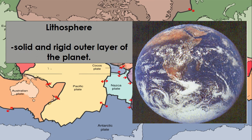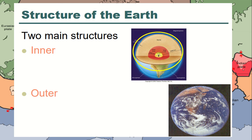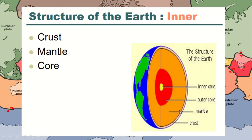Lithosphere — what do we mean by lithosphere? Lithosphere is a solid and rigid outer layer of the planet. As you can see, the Earth has two main structures. On the lithosphere, we have the inner and the outer. The structure of the Earth includes the crust, the mantle, and the core — the inner core and the outer core.